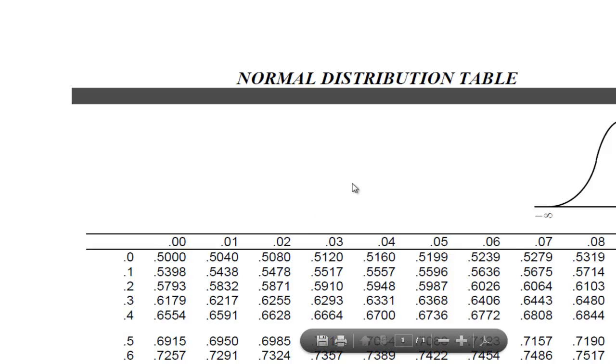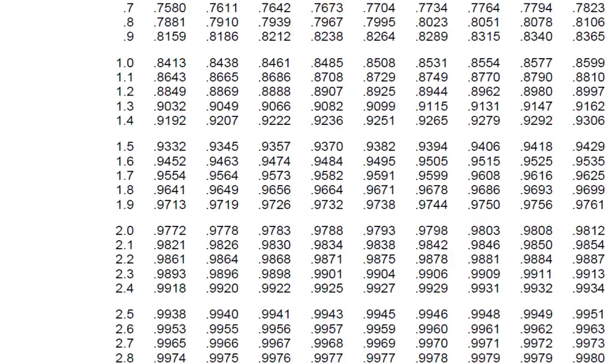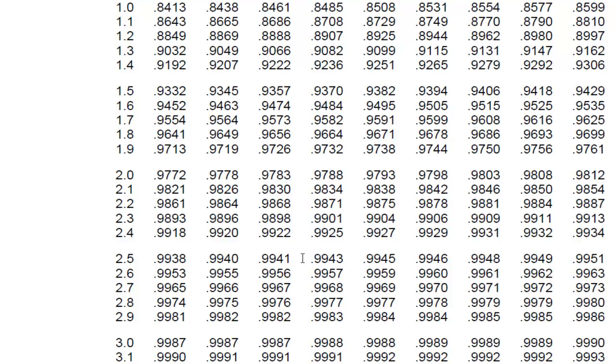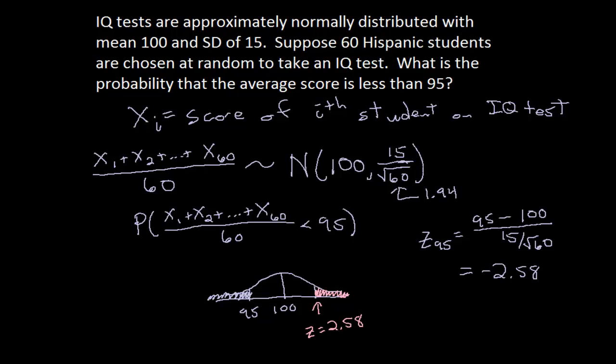So I'm going to pull up my normal distribution table here. It looks like I already have it from making the previous video. And here's 2.5. I've used this thing enough to know that that's 0.09, so that's 0.08. We have 0.9951.